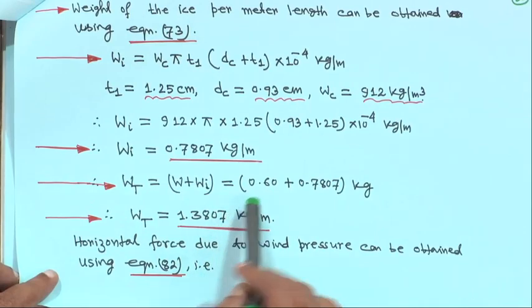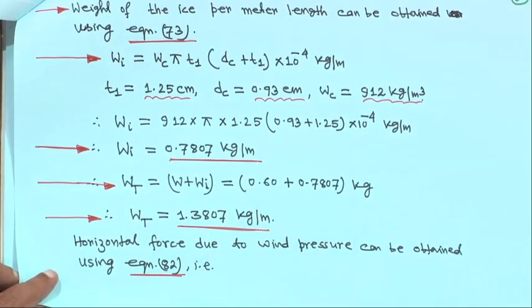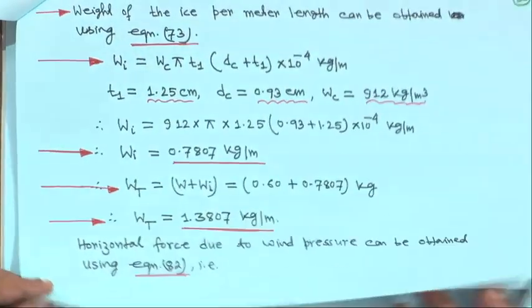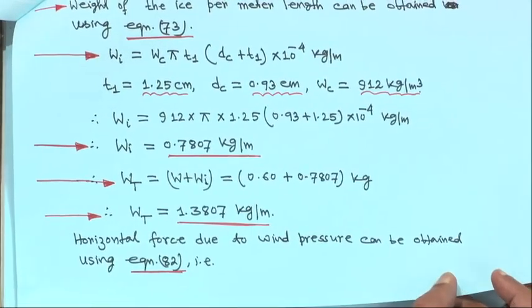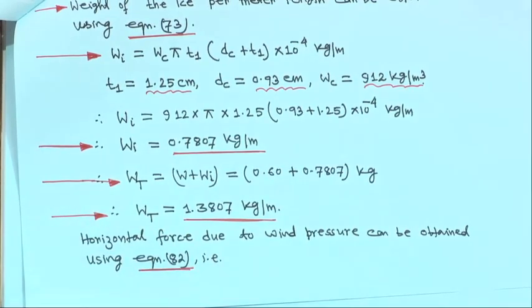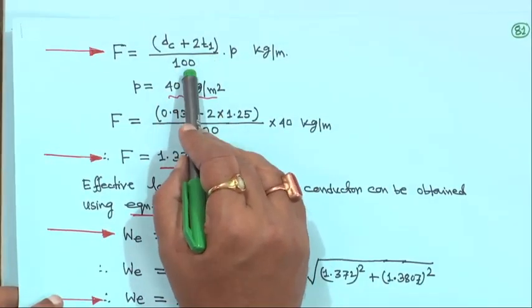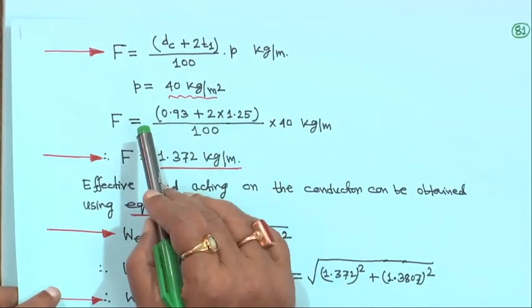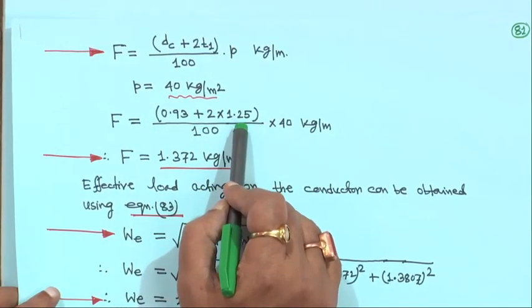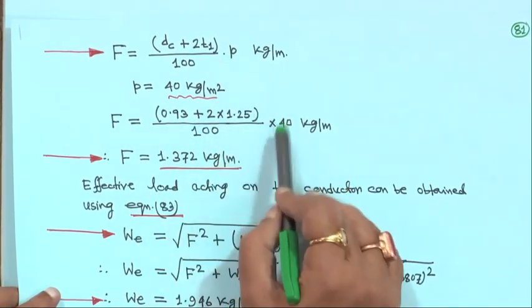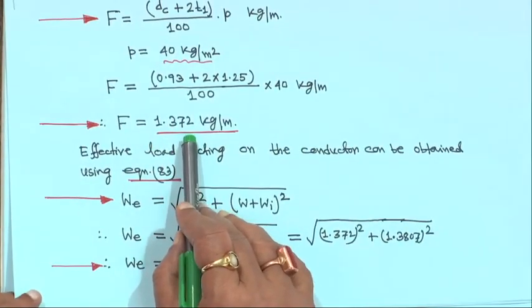Therefore Wt is equal to W plus Wi, that is 0.6 plus 0.7807 kg, giving total Wt equal to 1.3807 kg per meter. Horizontal force due to wind pressure using equation 82: F is equal to (DC plus 2·T1) upon 100 into P kg per meter. P is 40 kg per meter square, so F equals (0.93 plus 2 into 1.25) by 100 into 40, giving F equal to 1.372 kg per meter.